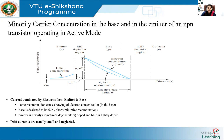As in any forward-biased PN junction, the concentration is proportional to e to the power VBE/VT. This minority carrier distribution in the base results from the boundary conditions imposed by the two junctions. It is not an exponential decay — which would occur if the base region were infinitely thick. Instead, because the base is thin, the distribution decays linearly. The reverse bias on the collector-base junction causes the electron concentration at the collector side of the base to be zero.